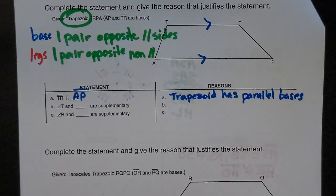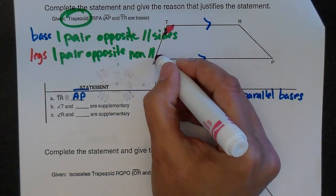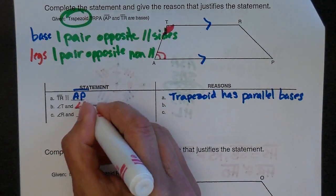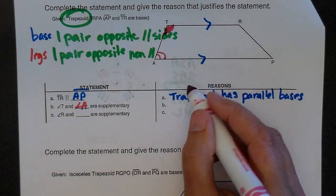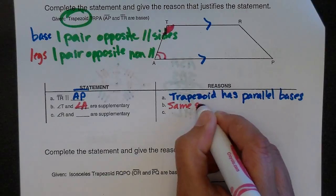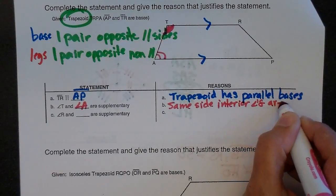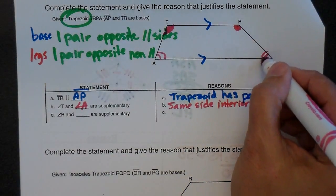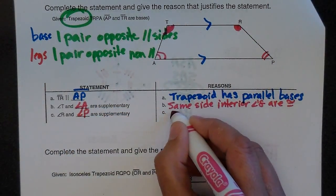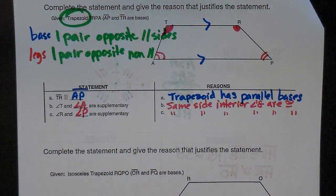I know that angle T and angle A are supplementary, because in a trapezoid you've got parallel lines, so the same side interior angles are supplementary. By the same token, R and P are supplementary by the same thing — same side interior angles are supplementary. So that's what we're using for the trapezoid.